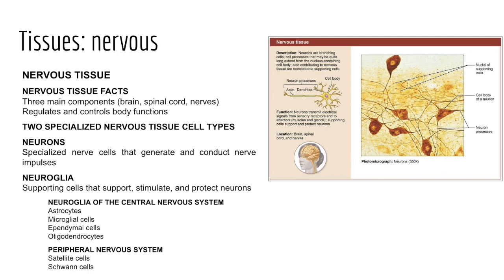In the peripheral nervous system, there are two glial cell types. Satellite cells have functions similar to astrocytes, providing physical support for neurons of the peripheral nervous system. Schwann cells are similar to oligodendrocytes, forming fatty insulating structures around nerves of the peripheral nervous system to insulate them and ensure rapid transmission of action potentials.